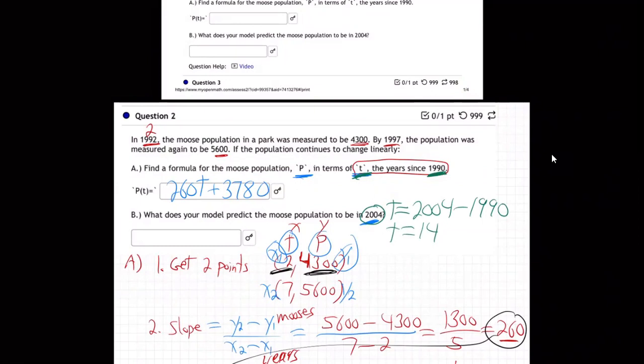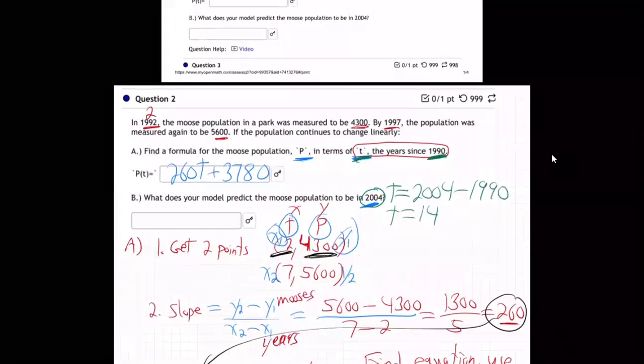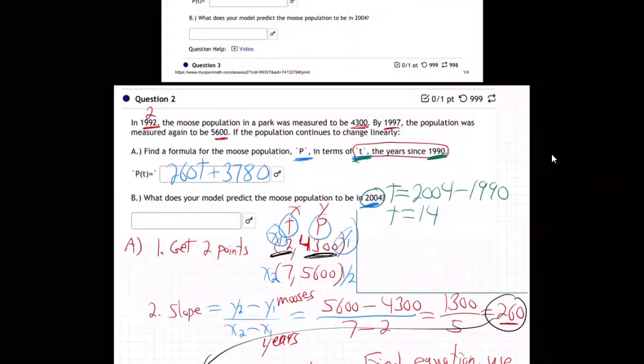Remember, T is how many years after 1990. So do you see that I just need to subtract? So T would be 14 because that's 14 years after 1990. Right? Everybody good there?